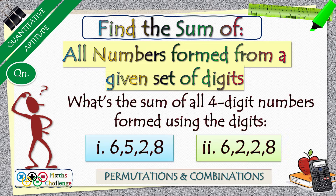We are going to take four digits. In the first case, we need to sum up all the four digit numbers that can be formed using the digits 6, 5, 2, and 8. And in the second case, we have the digits 6, 2, 2, and 8. As you can see, one of the digits is repeating here, so there is no general formula which we can apply. But if you know the basics, I promise you can solve this question in no time.